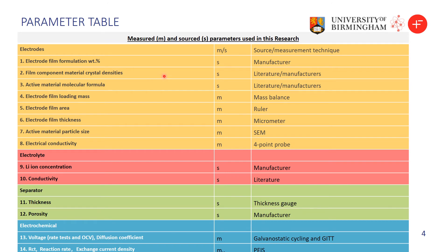This table summarizes the parameters used in the modeling. The first part covers electrode parameters such as thickness, particle size, and conductivity. Then we have electrolyte parameters, including lithium-ion concentration, conductivity, lithium-ion transfer number, and lithium-ion diffusion coefficient. We also have separator parameters like thickness and porosity. For the electrochemical part, we can obtain the OCV and diffusion coefficient from GITT tests. By performing EIS tests, we can obtain the RCT, reaction rate, and exchange current density. These parameters are all available for P2D modeling.